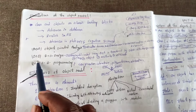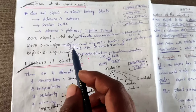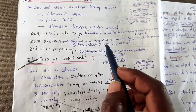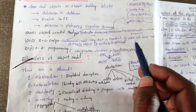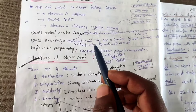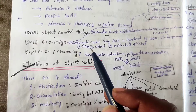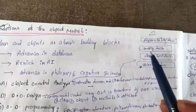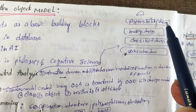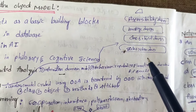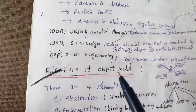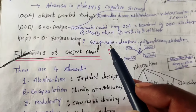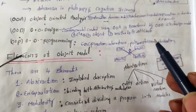Object-oriented design is a design process where the analysis model created using object-oriented analysis is transformed into a design model — called the object-oriented design model. It uses the following components: classes, objects, methods, and attributes. The structure of object-oriented design includes responsibility design, message design, class and object design, and subsystem design. Object-oriented programming is a programming model using encapsulation, inheritance, polymorphism, and abstraction.